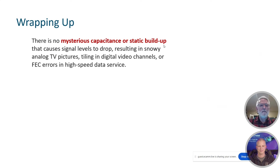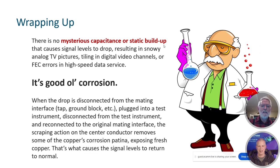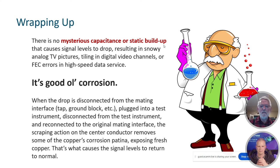So let's wrap this up. There's no mysterious capacitance buildup or static charge buildup that causes signal levels to drop — causing those snowy analog TV pictures, or tiling in the digital video channels, or FEC errors in high-speed data service. It's just good old fashioned corrosion. Basically, when the drop is disconnected from the mating interface, you hook it up to a field meter, disconnect from the field meter, and plug it back into the interface — all you've done is scrape or scrub some of the patina off the center conductor, and maybe scrape some corrosion off the threads of the F connector, expose fresh metal, and signal levels come back to normal. That's what's going on.